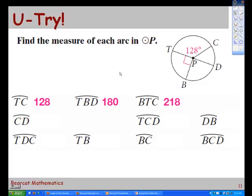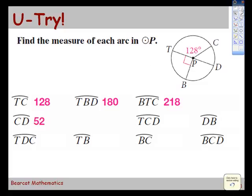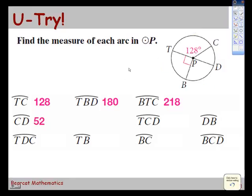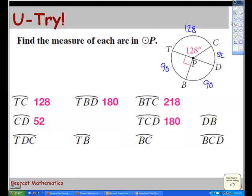Okay, now we need arc TCD. So T to C to D. Well, we've got that. That's slam dunk. What is it? 180. It's a semicircle, so it's just 180. And then arc DB. We already found that, didn't we? That's 90.